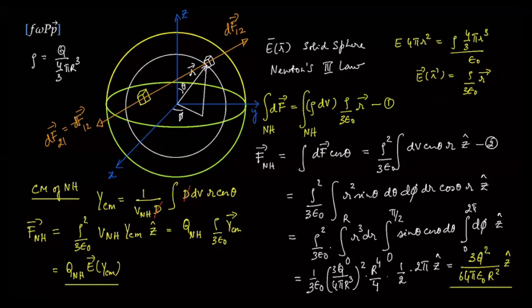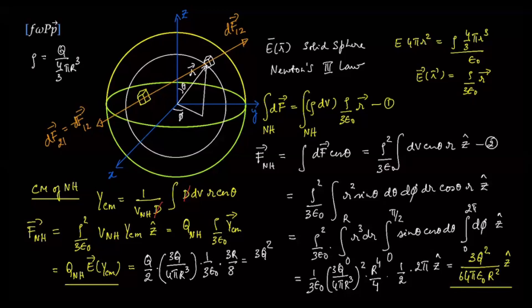This neat representation works only because the electric field inside is proportional to the position vector, which matches the center of mass equation exactly — so it holds for a solid cylinder as well. Substituting values: the charge in the northern hemisphere is q over 2, density is 3q over 4 pi r cubed, and the z-center of mass for the northern hemisphere is 3r over 8. Putting this all together gives 3q squared over 64 pi epsilon naught r squared, along the z-axis — exactly the same result as the direct integration.